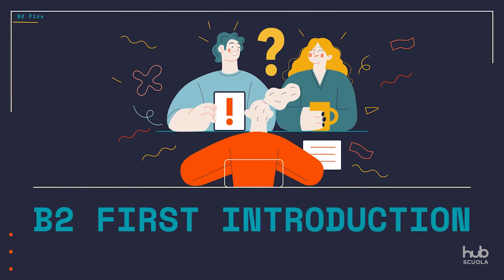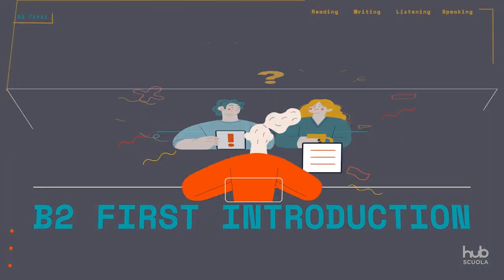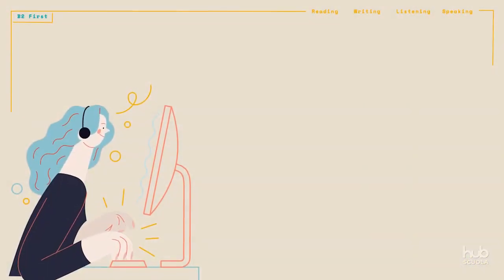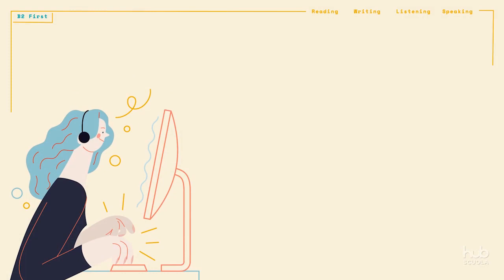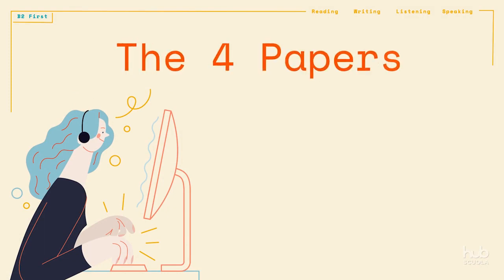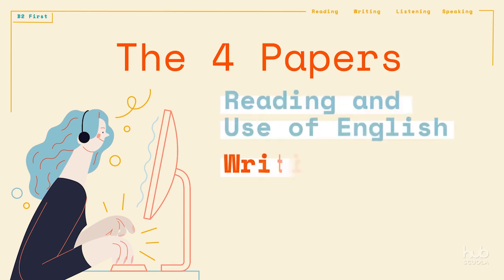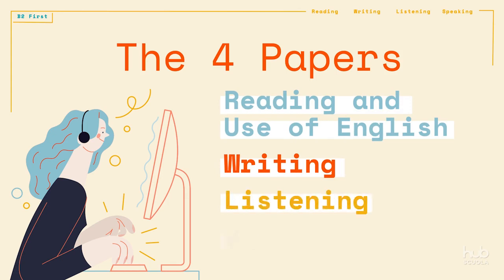B2 First Introduction. Cambridge English is a B2 level exam designed to assess your English fluency. There are four sections to the exam which are called Papers: Reading and Use of English, Writing, Listening and Speaking.